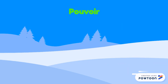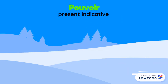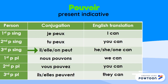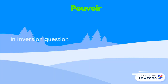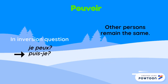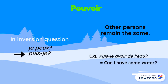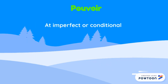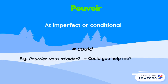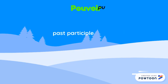The conjugation of pouvoir at the present indicative is: je peux, tu peux, il/elle/on peut, nous pouvons, vous pouvez, ils/elles peuvent. In an inversion question, 'je peux' becomes 'puis-je,' but other persons remain the same. For instance, 'puis-je avoir de l'eau?' (Can I have some water?) At the imperfect or the conditional, it is translated by 'could.' For instance, 'pourriez-vous m'aider?' (Could you help me?) Its past participle is pu.